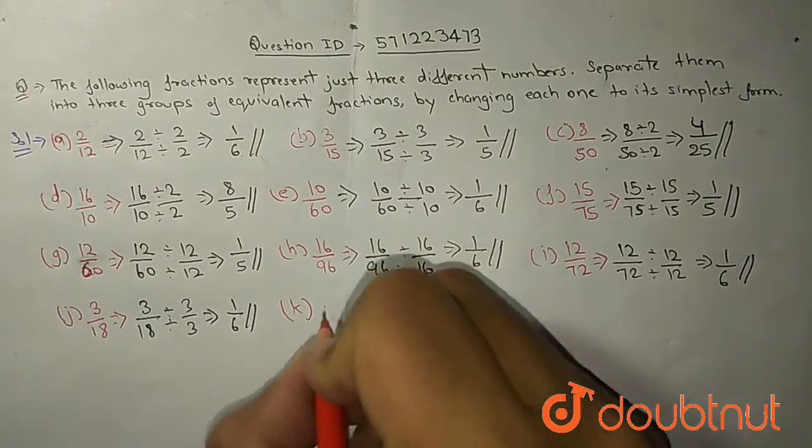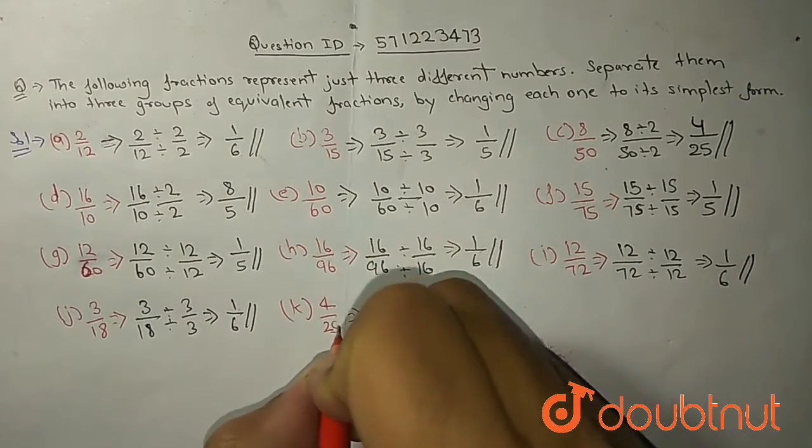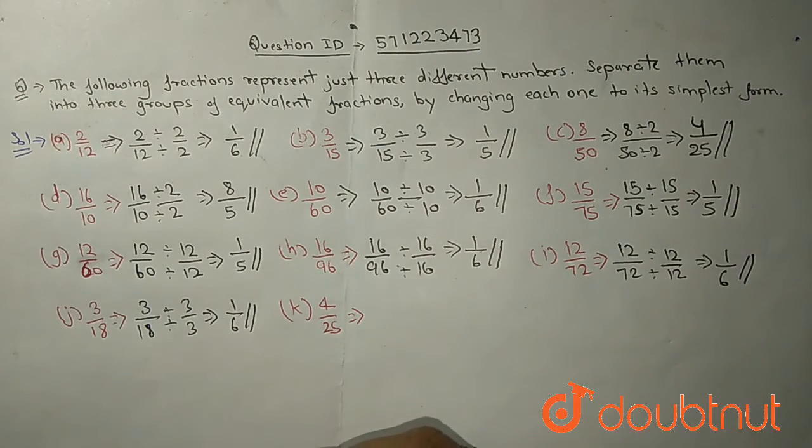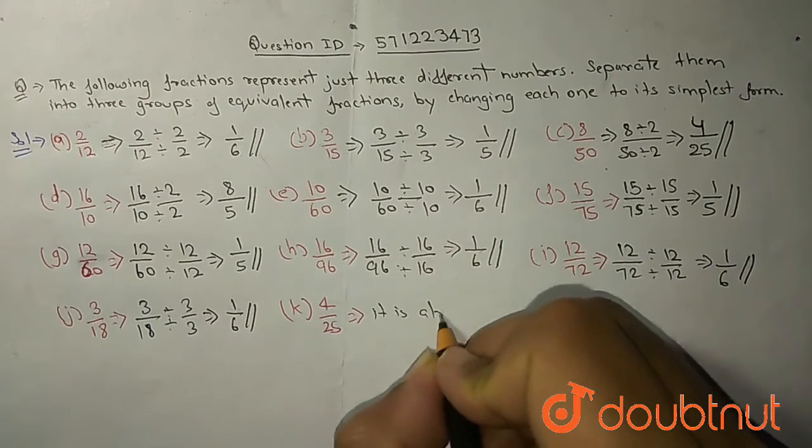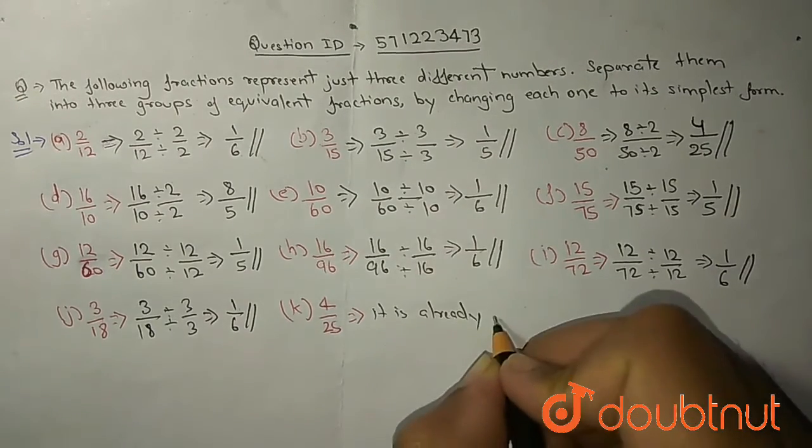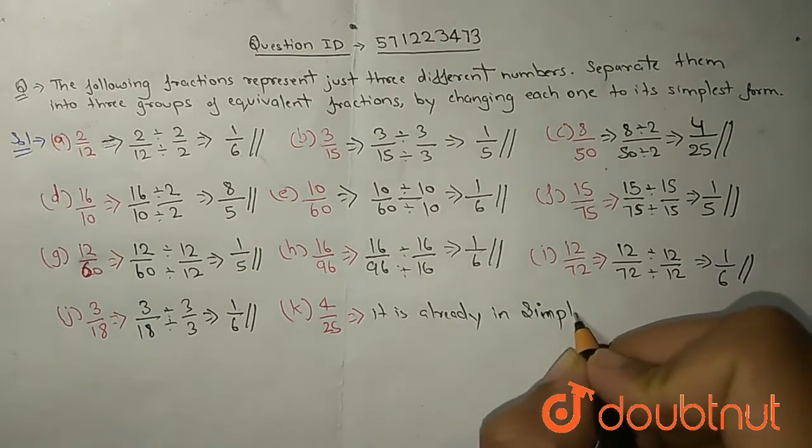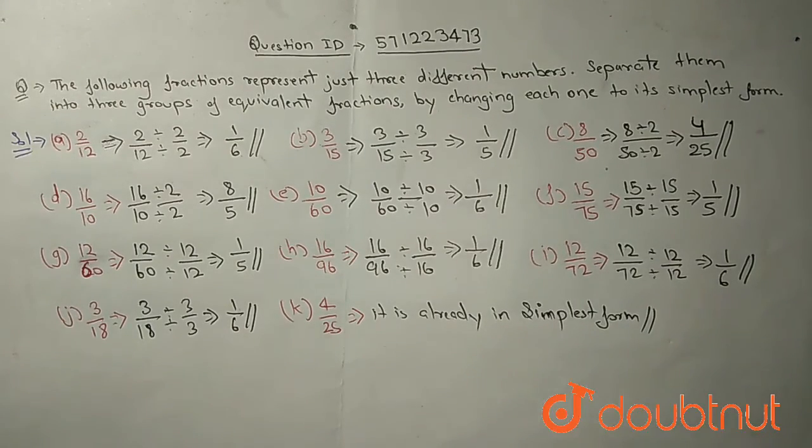Now moving to K part, 4 upon 25. Can you divide 4 upon 25? Is it possible to divide 4 upon 25? No. So it is already in simplest form. We can't divide it anymore so it is the final and most simplest form.